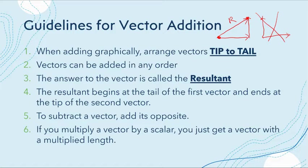Vectors can be added in any order — you can start with vector A, B, C, or D — just as long as they are adding in the correct direction. The answer to the vector addition is called the resultant. The resultant begins at the tail of the first vector and ends at the tip of the last. To subtract a vector, add its opposite. If you multiply a vector by a scalar, you just get a vector with a multiplied length.